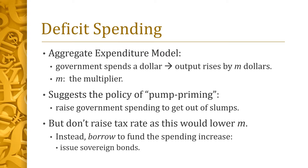But how to pay for the additional spending? Well, one could raise taxes. But an increase in taxes will cause less income to translate into new spending. This lowers the multiplier M, which blunts the effectiveness of the policy. Thus, it may be a better idea to borrow in the short run in order to fund the spending increase. In practice, the government does so by instructing the Treasury to sell bonds to investors.